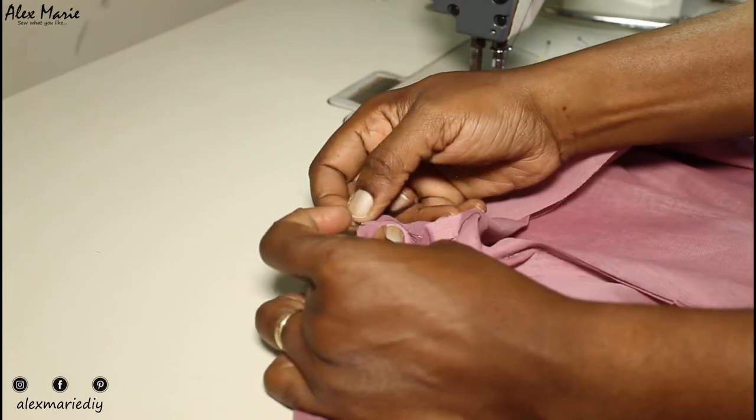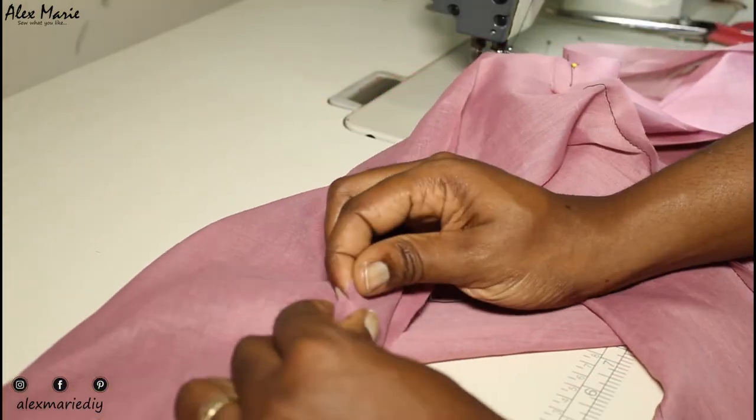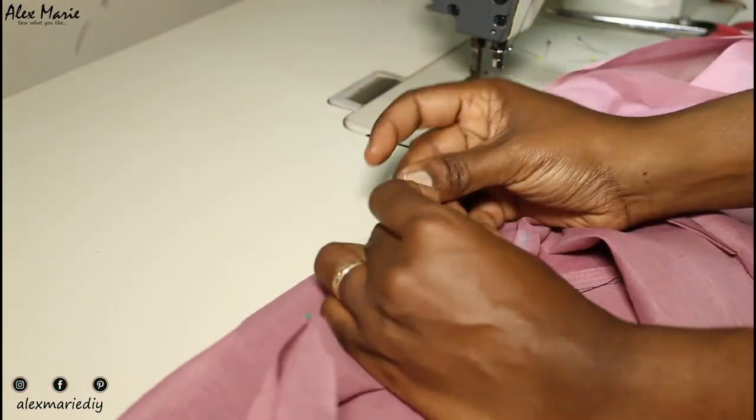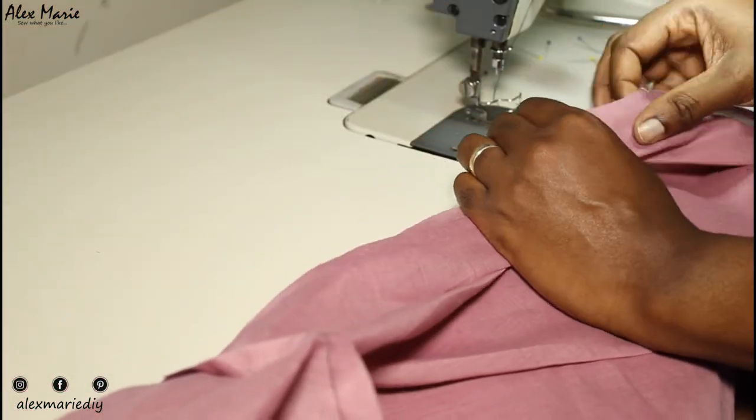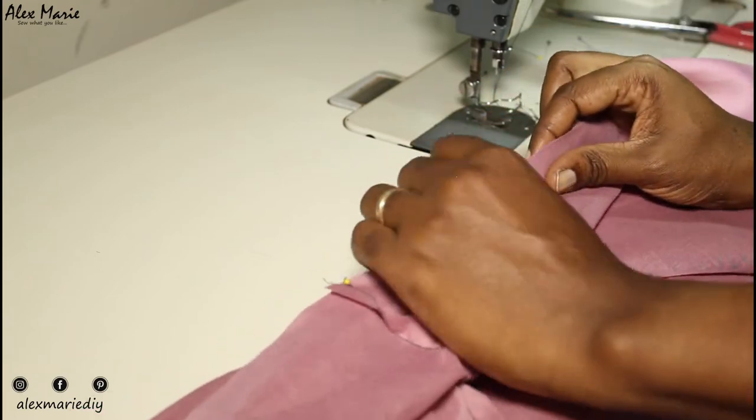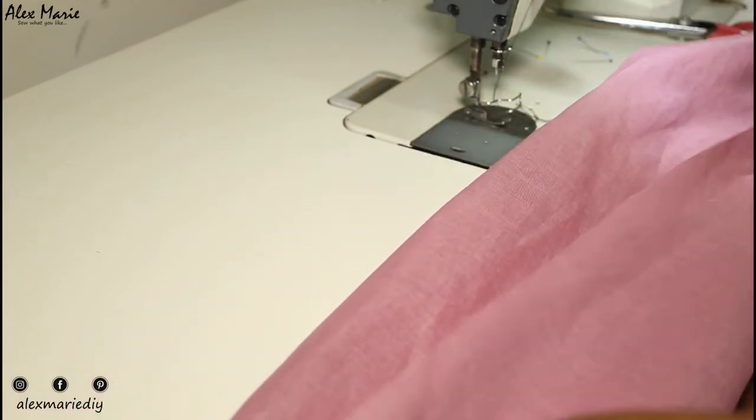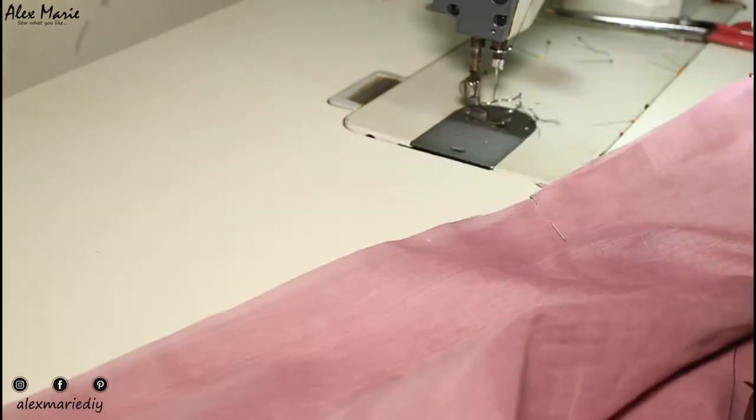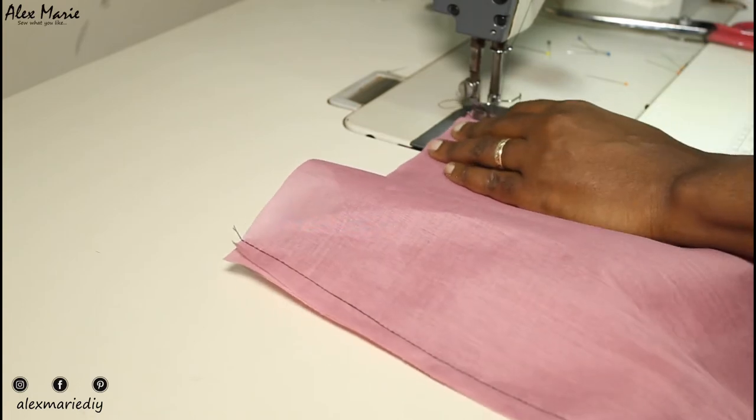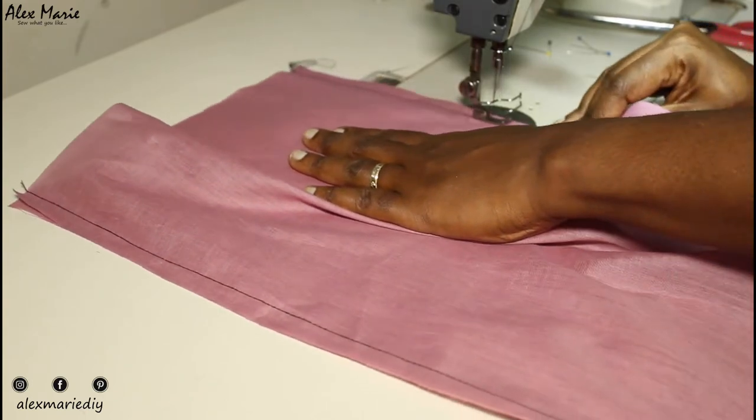Match the seams at the center of the crotch first, then you can pin down the leg. There is a notch at the knee, pin that first. Now at this point you might need to ease in the back inseam just a little. So when you're sewing, you're going to just pull on the fabric slightly to get everything aligned. I think between the center crotch seam and the knee, you're going to have to ease the back seam just a little. So here I'm starting from the foot or the hem of one leg actually, and I'm just going to sew up all the way.